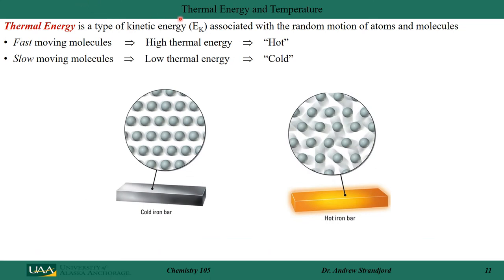Thermal energy is a very important form of energy in chemistry — this whole chapter on thermochemistry is dedicated to studying heat and energy. Kinetic energy associated with the random motion of atoms and molecules is thermal energy. Fast-moving molecules have high thermal energy and are hot; slow-moving molecules have low thermal energy and are cold.